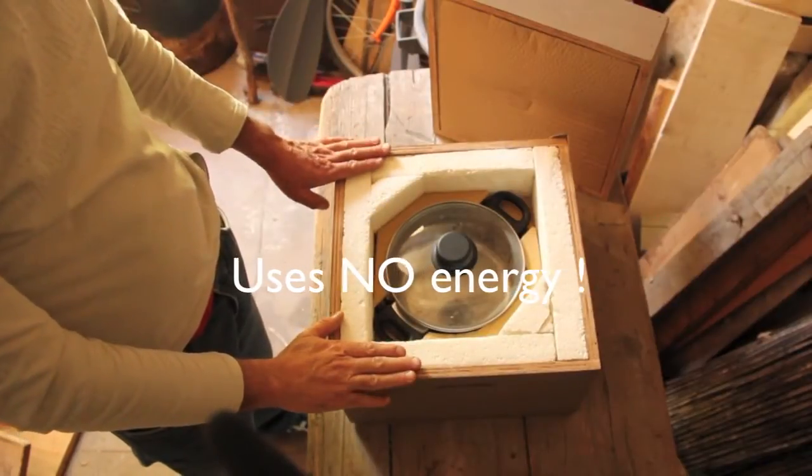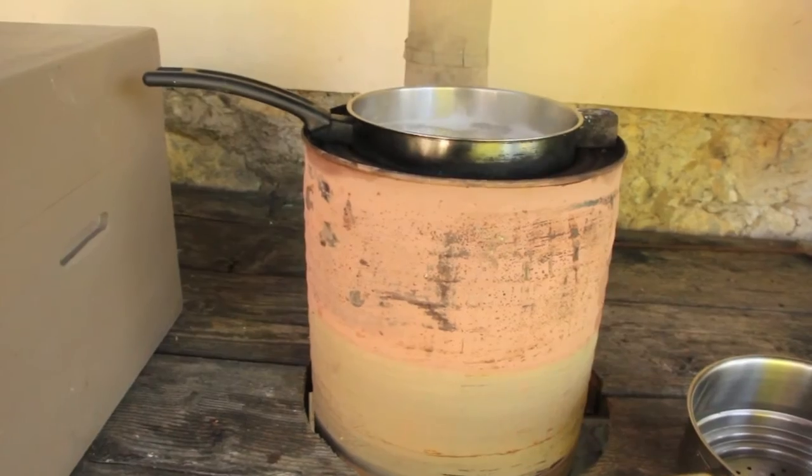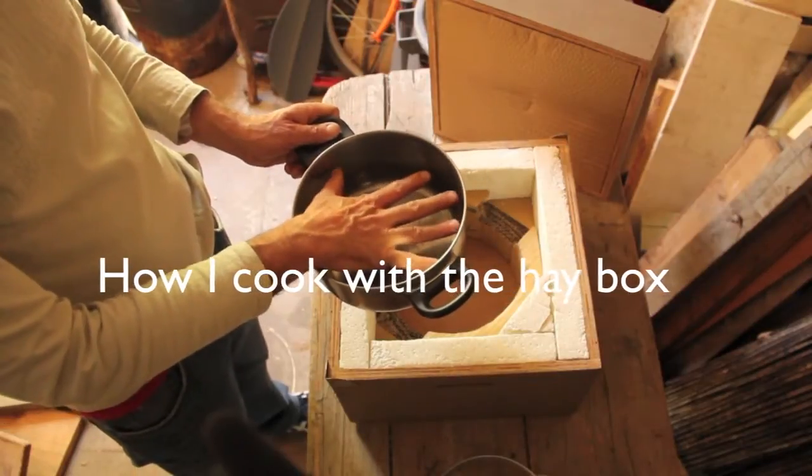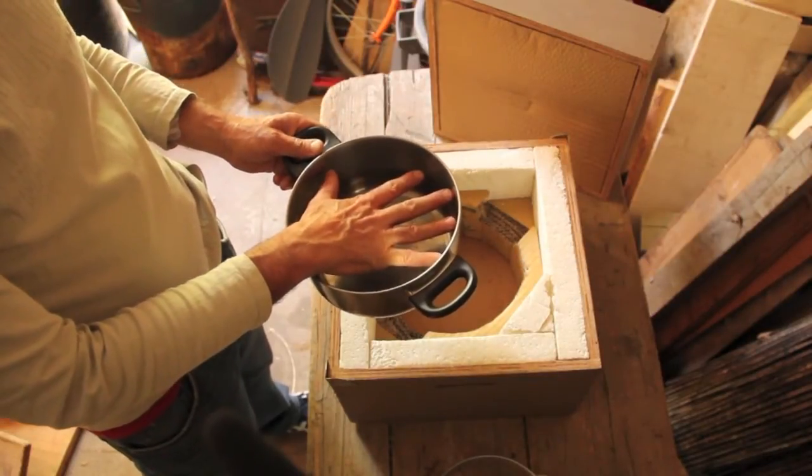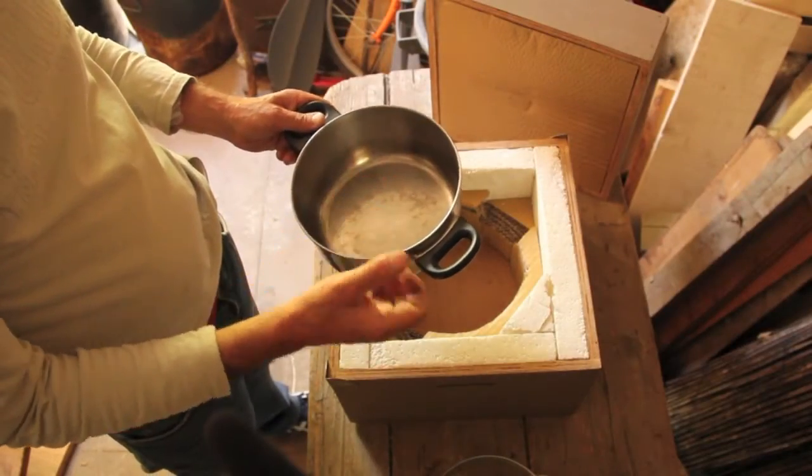This thermal cooker does not use any energy. I use it in combination with my rocket stove or, if I'm not using the rocket stove, my normal gas stove. I'm going to cook something in the pot. It has to be something which is liquid, like a vegetable stew, pasta, anything that's liquid that's going to keep the heat in.